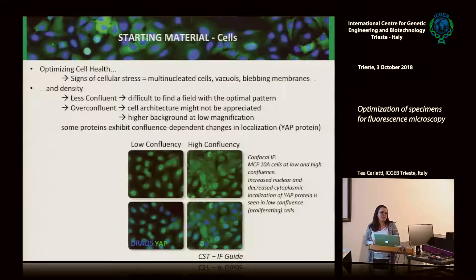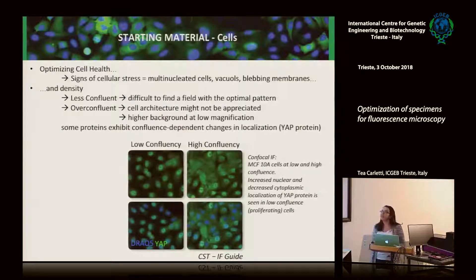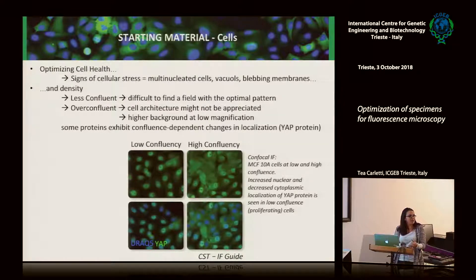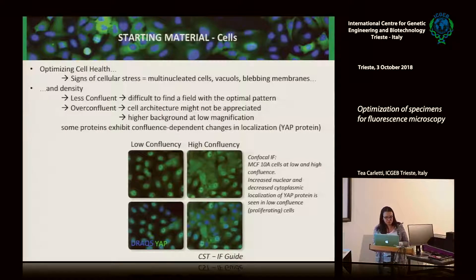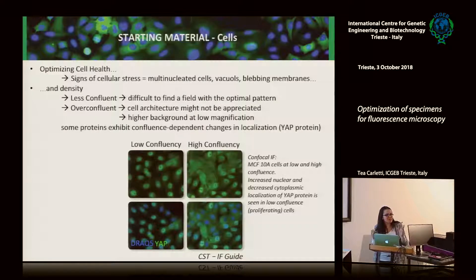Be sure that your cells are healthy. You don't want information from a population of cells that are going to die. You can easily see signs of cellular stress under the brightfield microscope before starting fixation and permeabilization: multinucleate cells, vacuoles in the cytoplasm, or blebbing membranes. At that moment you should stop and decide — should I repeat, should I continue?